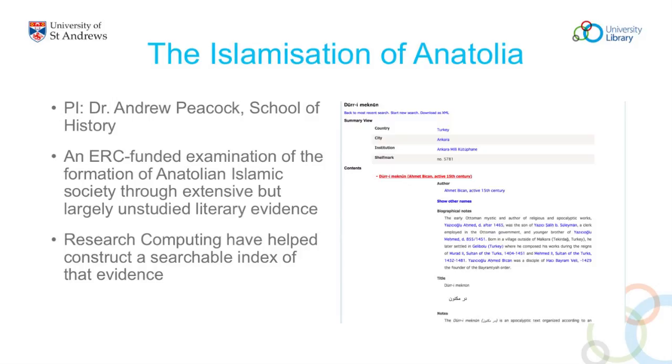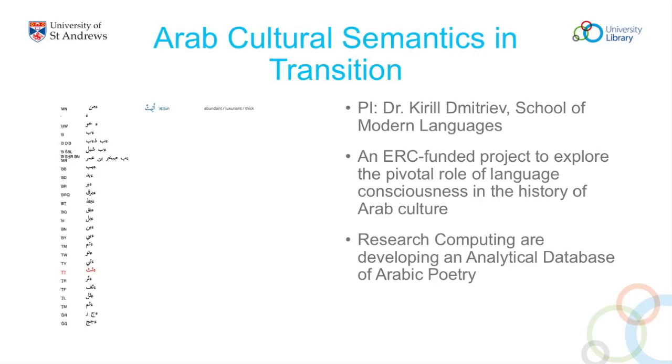The Islamisation of Anatolia is another project my colleagues are working on. There is an extensive body of evidence about the Islamisation of Anatolia in the Middle Ages which hasn't been studied, and we've built a searchable index of this evidence characterised in various ways. And Arab Cultural Semantics in Transition, which concerns the pivotal role of language consciousness in the history of Arab culture — the interface lets you select a root from the left-hand side, see the corresponding lemata, pick one to see a sense, and then see that in context in a sample from the corpus of poetry, which is used as a constructed database.